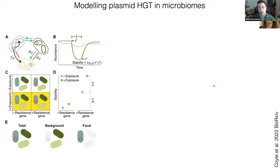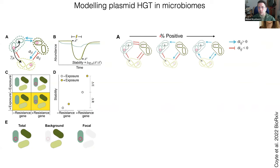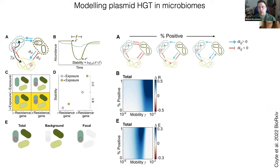Cat then introduced the full network of species interactions to test how horizontal gene transfer by plasmids affects stability of different kinds of microbial communities, varying the percentage of positive interactions from a purely competitive community to a cooperative one. Looking first at total community stability: adding resistance genes is usually beneficial, and does so most strongly with highly mobile resistance genes in a cooperative community. Delta-E is again felt most strongly at intermediate mobility levels.